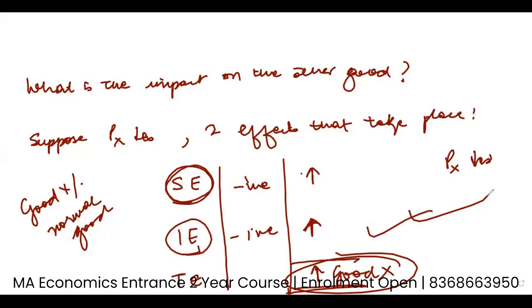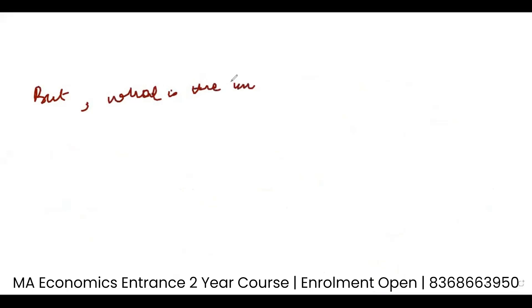But the question I want to ask now is: what is the impact on good Y? I understand that consumption of good X is definitely increasing when the price of good X decreases, but what is the impact on good Y is something I am interested to understand. To understand that, I am going to revisit the substitution and income effects.